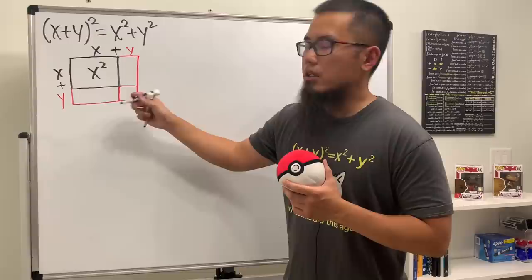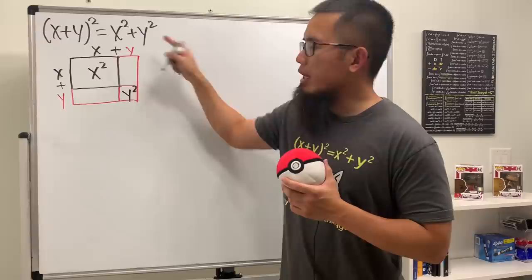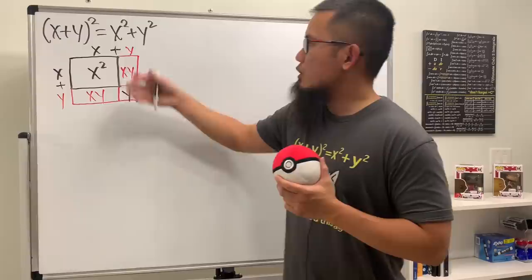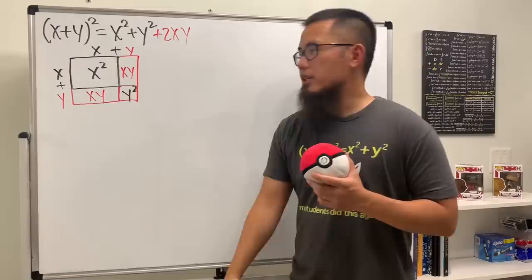Well, as you can see though, here is y, here is y, so this right here has the area y². We do have the x² plus y² already, but we are still missing this and that, right? This rectangle has the area of what? x times y, so we'll just put that down as xy. Likewise, this is also x times y. So you see, this right here, we need to have 2xy.